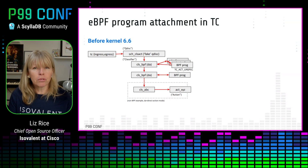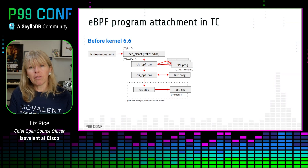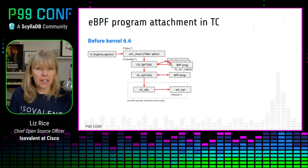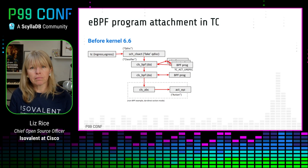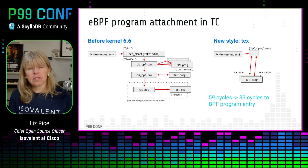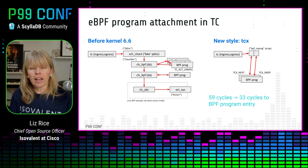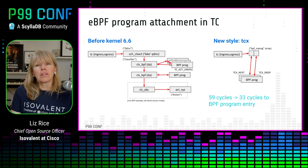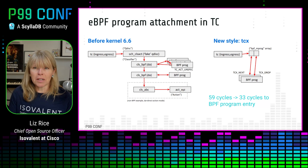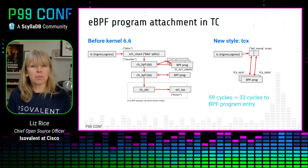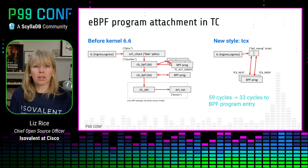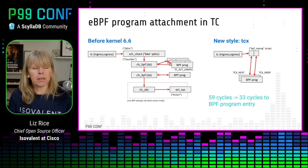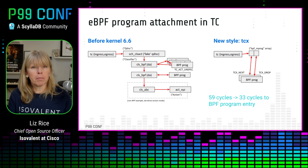I have some diagrams that give you a sense of how TCX simplifies and streamlines things. In the old design before 6.6, you had to create a fake queuing discipline that doesn't actually do any queuing and simply exists as somewhere for eBPF programs to be attached. In the new design, there's a new BPF multiprogram array attached much more directly to TC at either ingress or egress. This streamlining also makes it more performant — the microbenchmark shows a reduction to around half the number of CPU cycles used before a BPF program is entered.